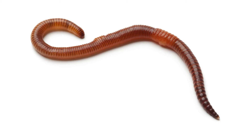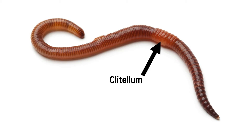The dorsal blood vessel can shine through in the middle of the back. From February to August, a lighter-coloured, thickened belt — the clitellum — can be seen in the front third of the body of sexually mature animals.